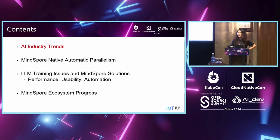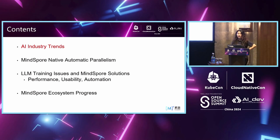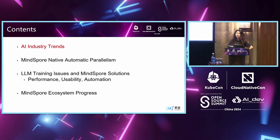Today's content will be divided into four topics. First, we'll briefly go through the evolution of artificial intelligence in industry. Then we'll go into details about MindSpore's native support for automatic parallelism, including code implementation, to see how it differs from other frameworks and what we've done to improve usability, efficiency, and performance of large language model training. We'll also discuss detailed issues during LLM training and our solutions, and finally a report on MindSpore's ecosystem progress.